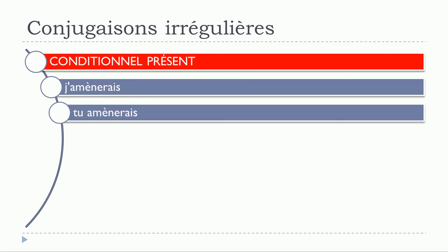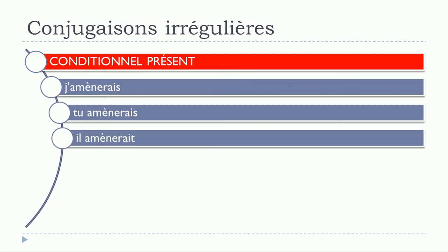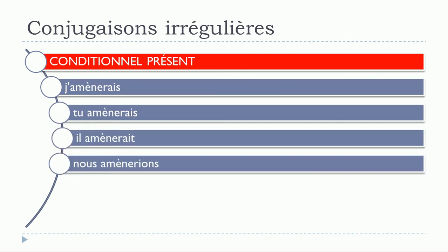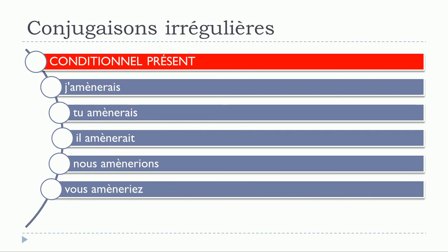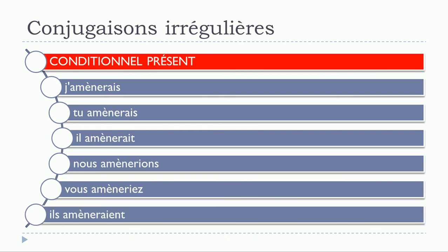Conditionnel présent: tu amènerais, il amènerait, nous amènerions, vous amèneriez, ils amèneraient. It's exactly the same thing — the modification affects all the forms.